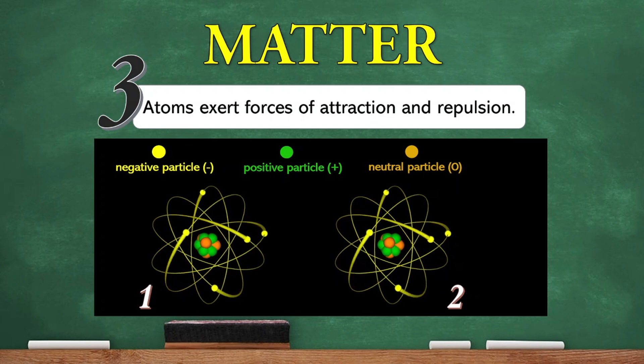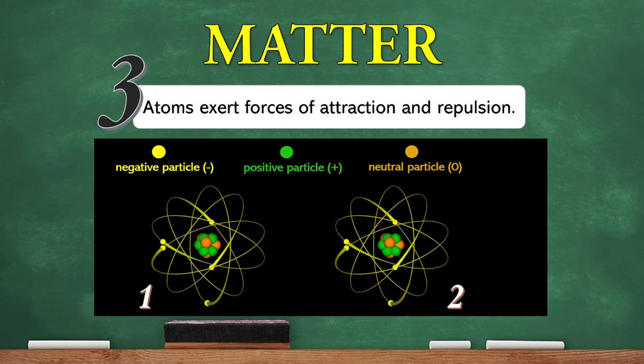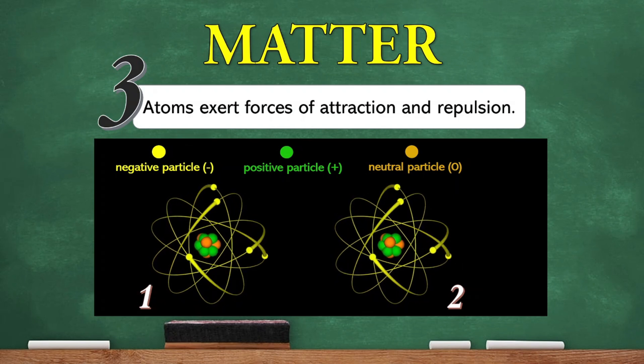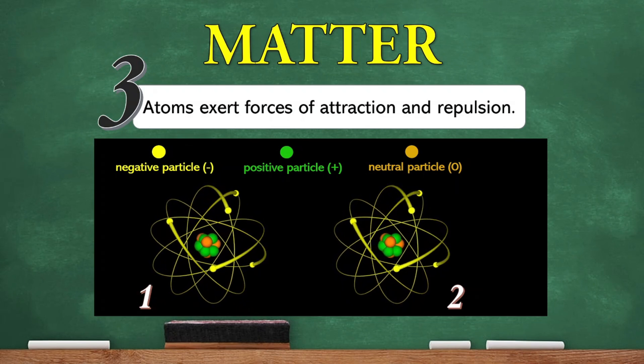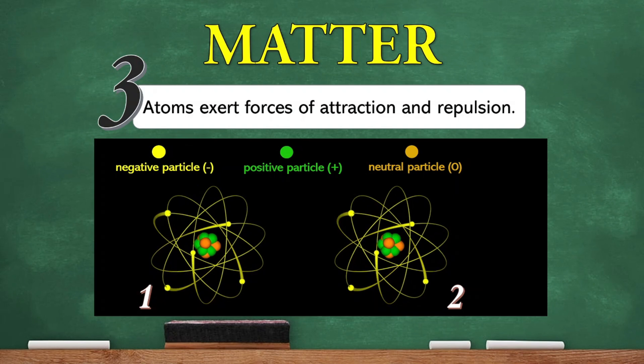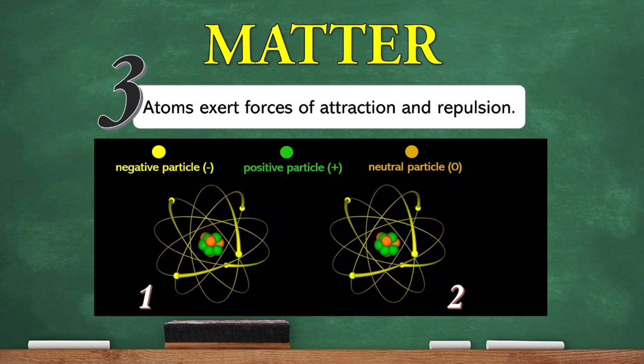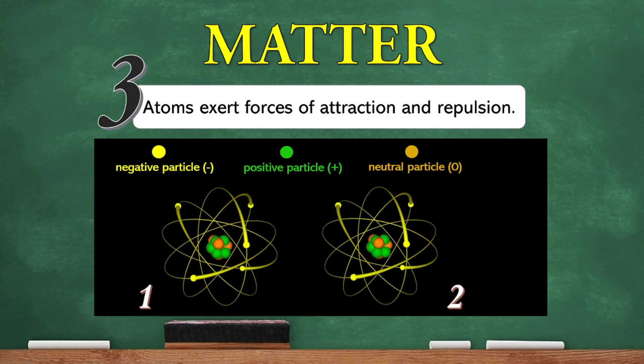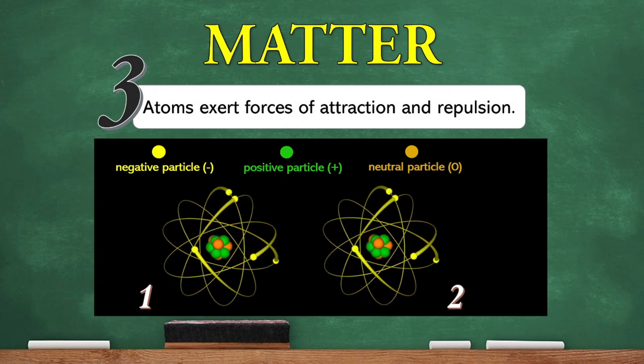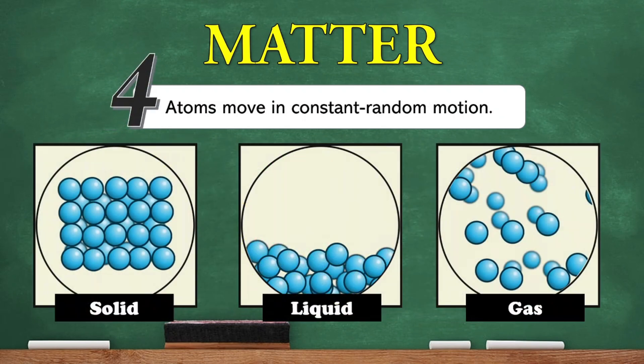As long as the two atoms possess negative and positive particles, the force of attraction and repulsion will always exist, causing the two atoms to continuously attract and repel one another. The continuous attraction and repulsion between the atoms causes the atoms to have a constant motion.